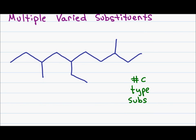The second scenario of naming multiple substituents is when you have substituents on your chain that are not the same. In this example I have a one-carbon, two-carbon, and one-carbon substituent. You go about the naming process as before, but when you put together your final name you alphabetize your substituents.